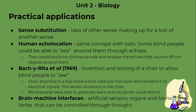Practical applications: having your brain rewire as an adaptation to changes can be really helpful for everyday life. One example is sense substitution — the idea of other senses making up for the loss of another sense. This is typically seen with blind people, who develop heightened senses to make up for their loss of sight. Human echolocation works on the same concept as bats — some blind people can navigate by producing clicking sounds and analyzing the echoes that bounce off objects around them.